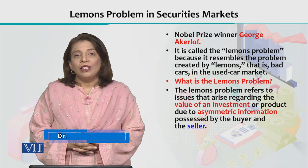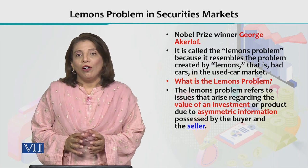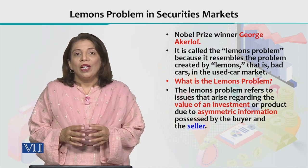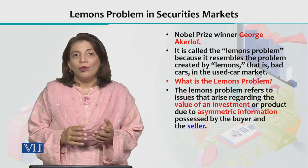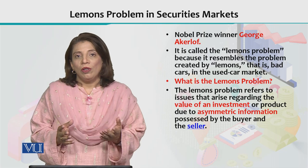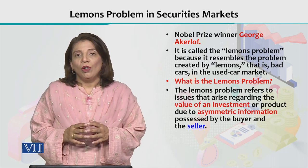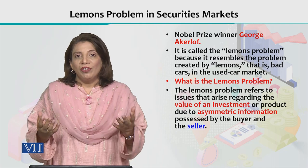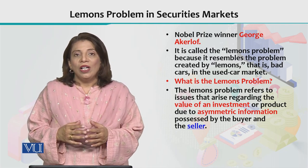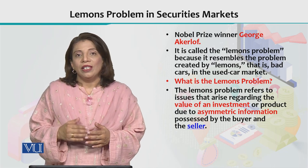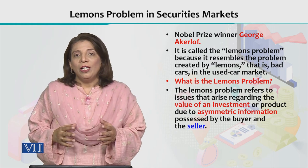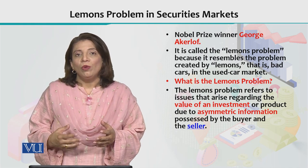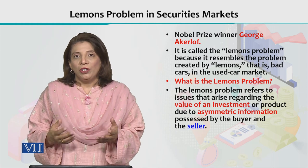George Akerlof explained the concept of lemons problem in the context of used cars. His theory says that when we are going to buy a car from the used car market, we just look at the overall image, the overall picture, or the way the car looks. We look at the paint and the physical structure of the car, but we do not know what lies inside the used car — it may be accidented, it can have some problems with the engine. We don't know unless and until we are actually using that car, and only then we will be able to find out what is wrong about that used car.